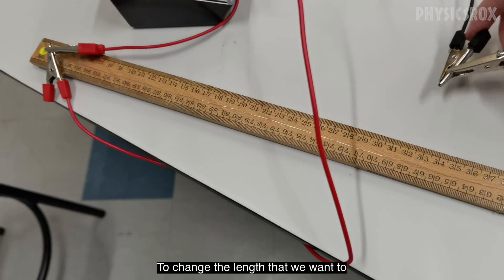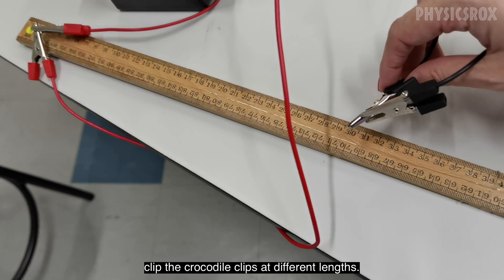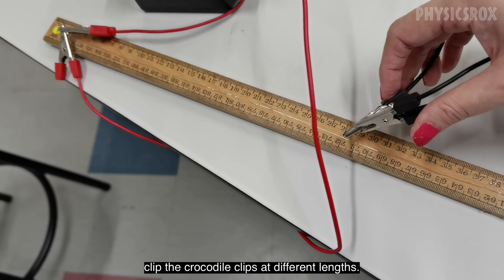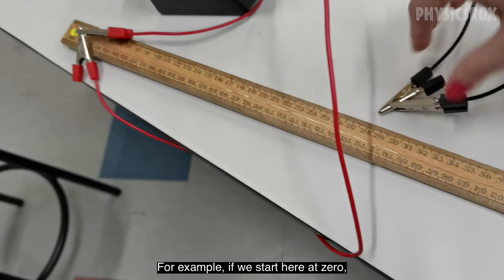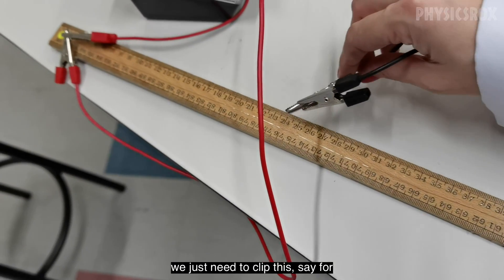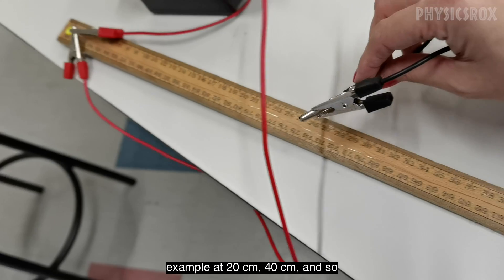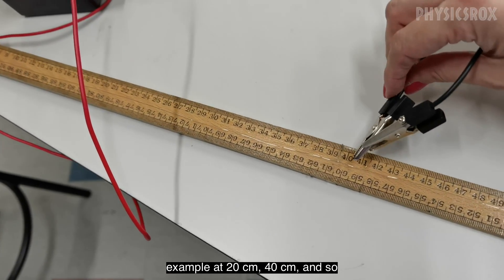To change the length that we want to measure, all we need to do is just clip the crocodile clips at different lengths. For example, if we start here at 0, you just need to clip this, say for example, at 20cm, 40cm, and so on.